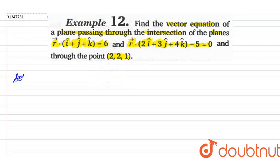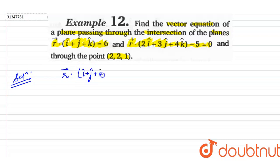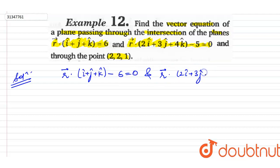Solution. The two planes at whose intersection we need to work are: r-vector dot (i-cap plus j-cap plus k-cap) minus 6 equals 0, and r-vector dot (i-cap plus 3j-cap plus 4k-cap) minus 5 equals 0.